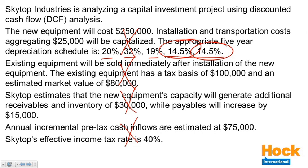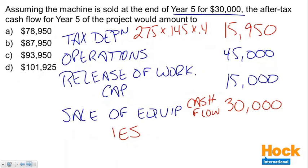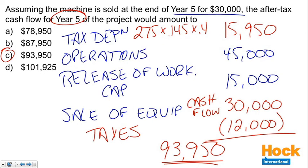Go through and make certain that you've dealt with all of the numbers in the question — sometimes dealing with it means doing nothing; it's just not relevant to every single question. Go through, get all the numbers, and it's just a matter of doing the math. These are questions you can do. There's a lot of information, but if you treat it piece by piece and go through it step by step, you'll get the right answer on all questions having to do with cash flows in capital budgeting.